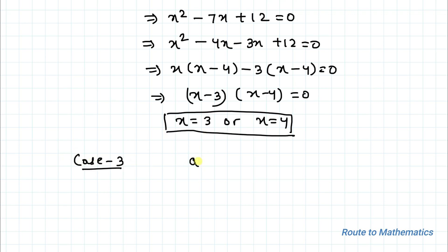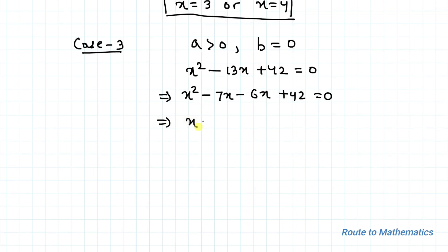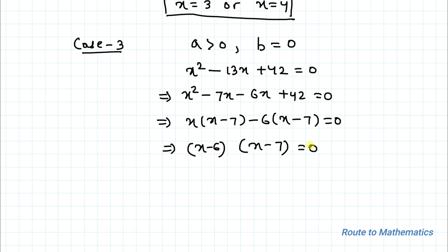Case 3: a > 0 and b = 0. Setting x² - 13x + 42 = 0, we use middle term splitting: x² - 7x - 6x + 42 = 0, so x(x - 7) - 6(x - 7) = 0, giving (x - 6)(x - 7) = 0. Therefore x = 6 or x = 7.